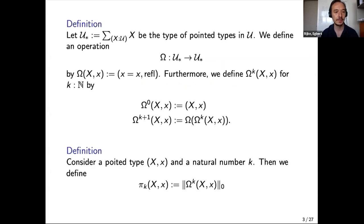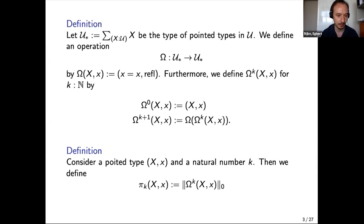Remember that we define the type of pointed types to be the type of types equipped with a point — that's just a sigma type, written as U*. The loop space is an operation on the type of pointed types: if I have a pointed type I can look at the loops at that base point, and the base point of the loop space will be refl. When written like this, I can iterate it: the zeroth loop space is just the space itself, and the (k+1)-th loop space is the loop space of the k-th loop space.